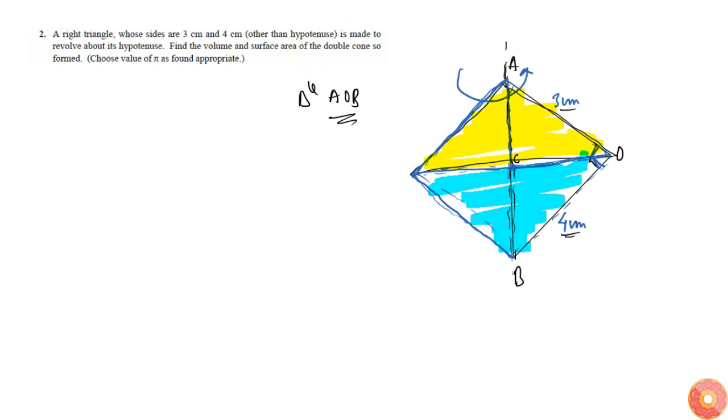We are asked to find the volume and surface area of the double cone. So total volume will be equal to sum of this upper cone volume plus lower cone volume.